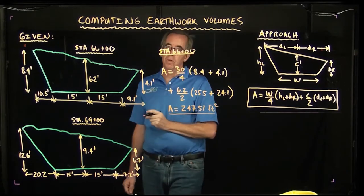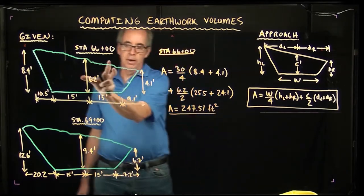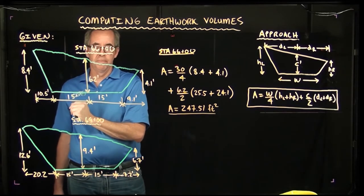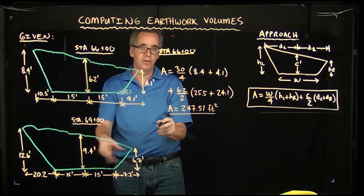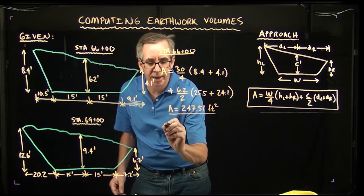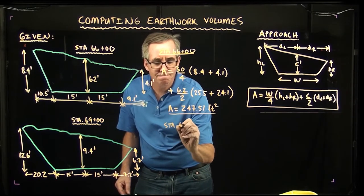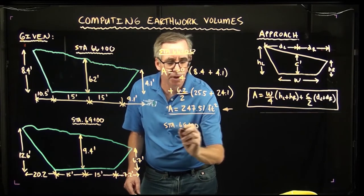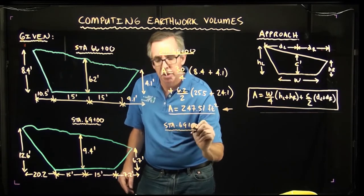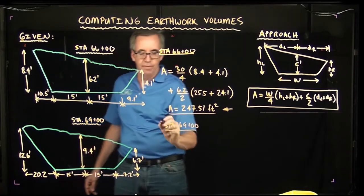And I'll go ahead and underline that. So that's the cross sectional area of this cross section here. Now we'll apply the same exact formula for the cross section at station 69+00.